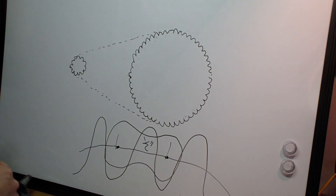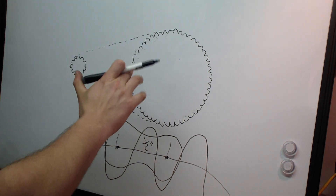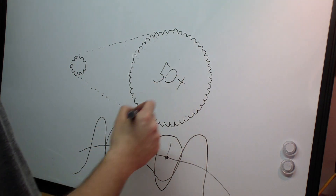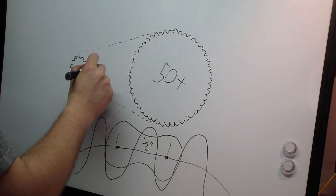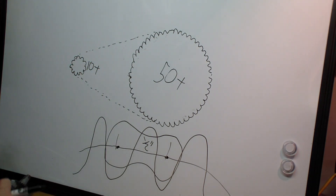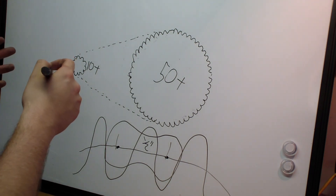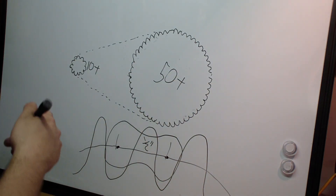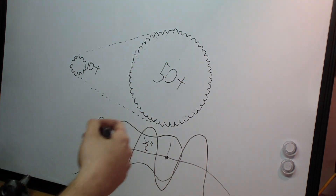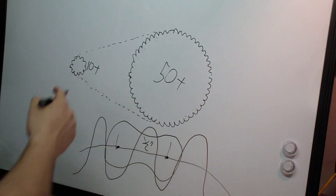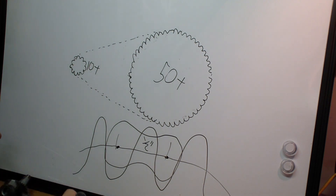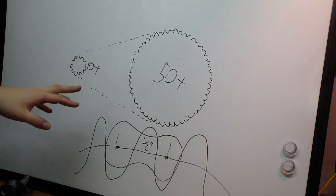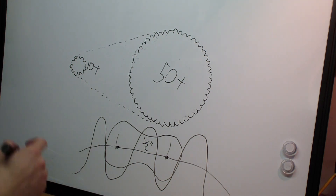If this is 420 chain, say the rear sprocket is 50 teeth and the front sprocket is 10 teeth. You take the output gear divided by the input gear to get gear ratio: 50 divided by 10 gives you a 5-to-1 gear ratio.